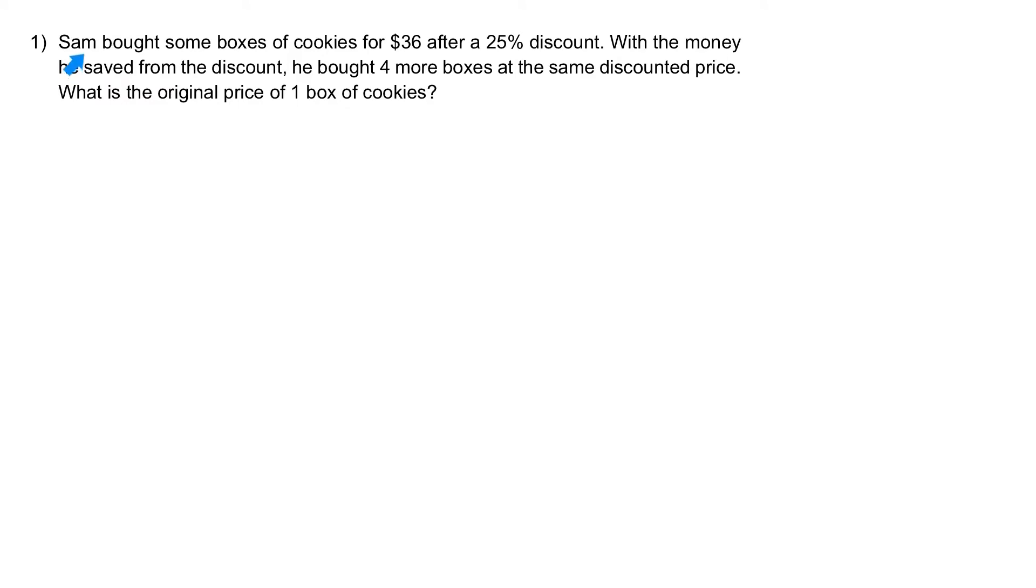Question 1. Sam bought some boxes of cookies for $36 after a 25% discount. With the money he saved from the discount, he bought 4 more boxes at the same discounted price. What is the original price of 1 box of cookies?